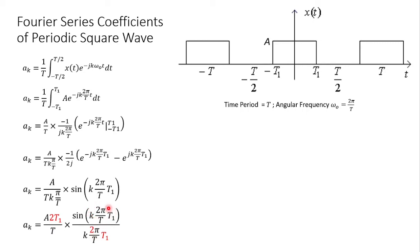Whatever is in the argument, we also want to divide the whole sine function by that. We can do that by multiplying and dividing by 2t₁. So in the numerator we have multiplied by 2t₁, and similarly in the denominator we have multiplied by 2t₁.